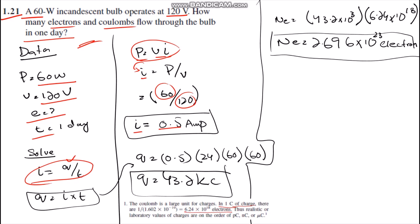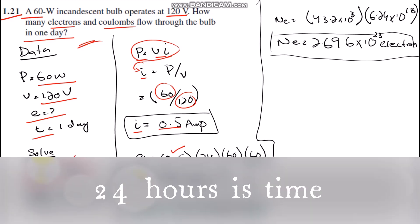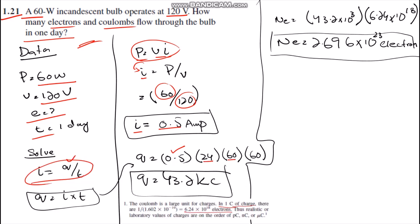I is 0.5, which we have substituted, and the time is 24 hours multiplied by 60 minutes multiplied by 60 seconds. Then we get Q equals 42.3 kilocoulombs. The second part of the question is also demanding to find electrons.